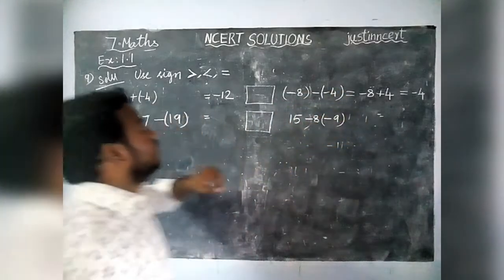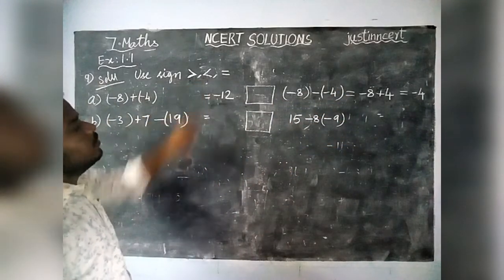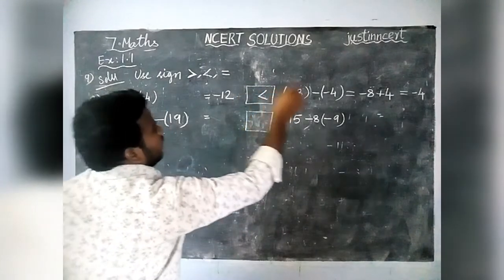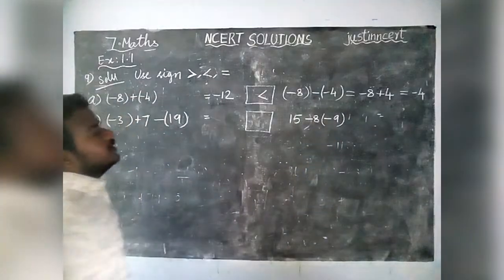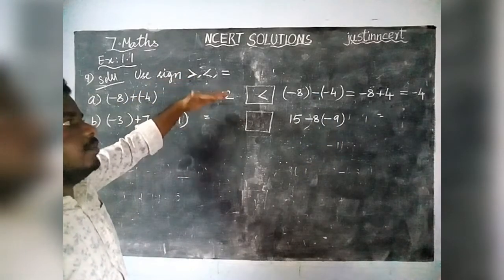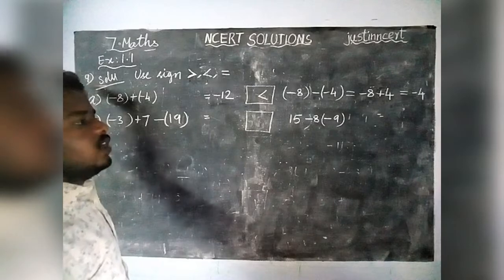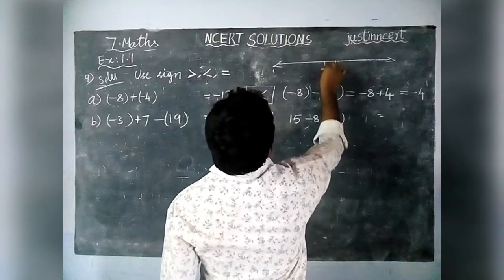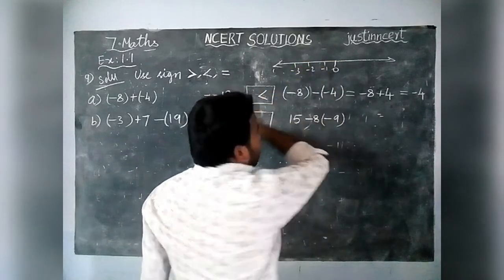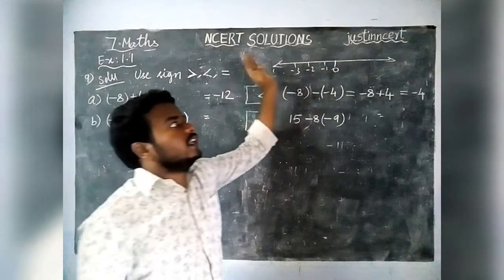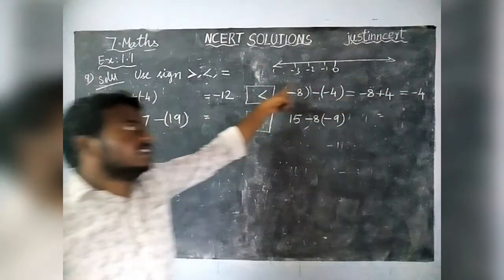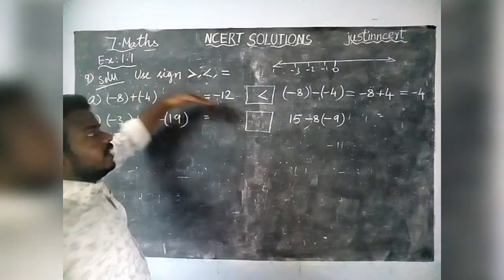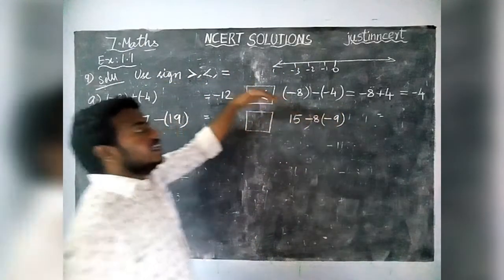These two are not equal. Which one is the greater value? Minus 4 is the greater value, so we use the less than symbol. Minus 4 is the greatest number. Why? Because when we use negative numbers on the number line, if we move to the left, the value decreases. For example, on the number line: minus 1, minus 2, minus 3. When moving right, value increases; when moving left, value decreases. So minus 4 is a greater value than minus 12.